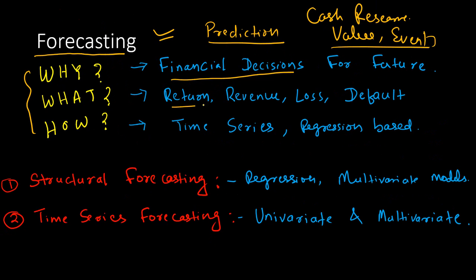In the values category, you need to forecast return — stock market return. Many times you would be investing money in the stock market, or banks will be investing money deposited in accounts into some portfolio. So portfolio return is something that is forecasted using a forecasting model. Revenue — banks' revenue, financial institutions' revenue — and loss are also important things to monitor, especially since regulators keep an eye on loss.